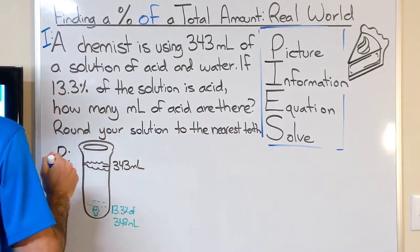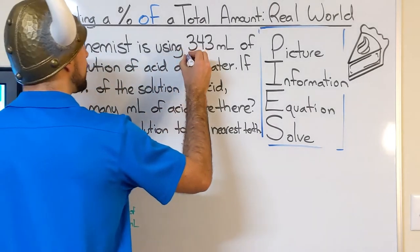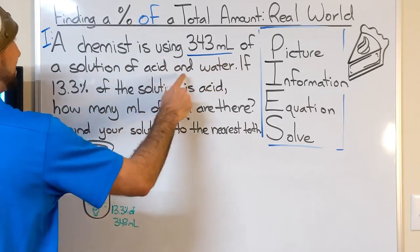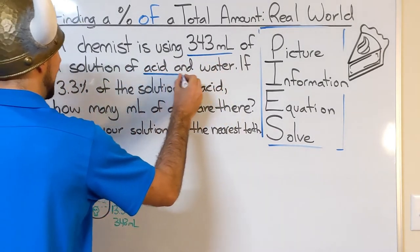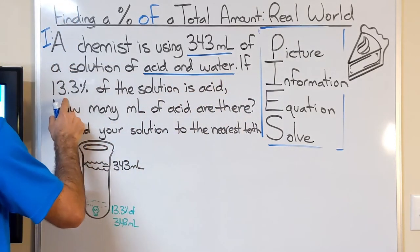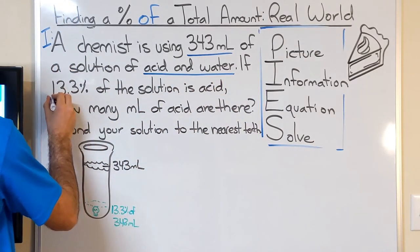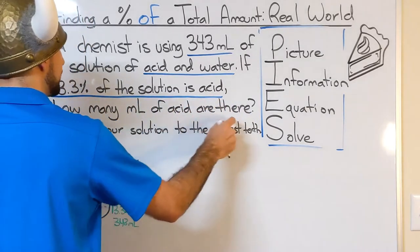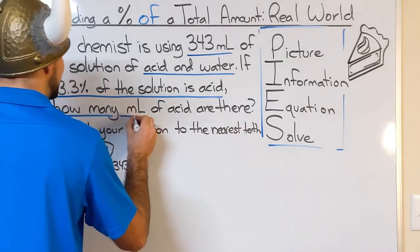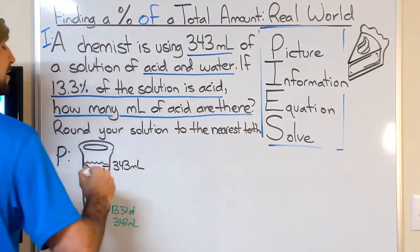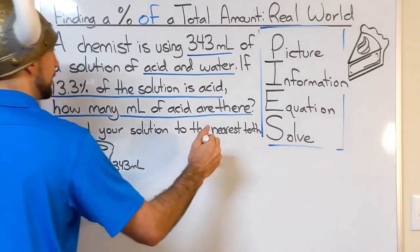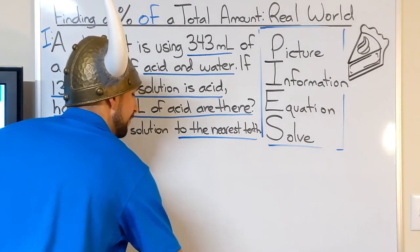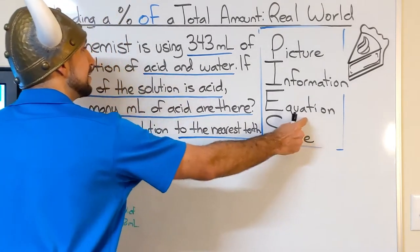A chemist is using 343 milliliters. Again, the unit is important, of a solution of acid and water. 13.3% of the solution is acid. How many milliliters of acid are there? So we're asked to find the acid. Again, we're going to be rounding our solution to the nearest tenth. Now that we've found the pertinent information, let's write an equation.